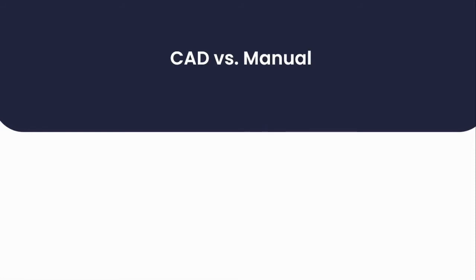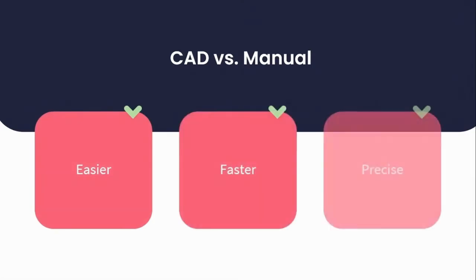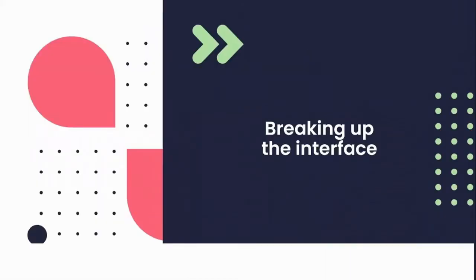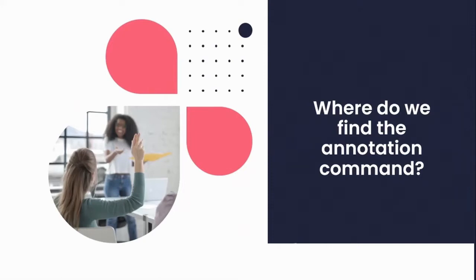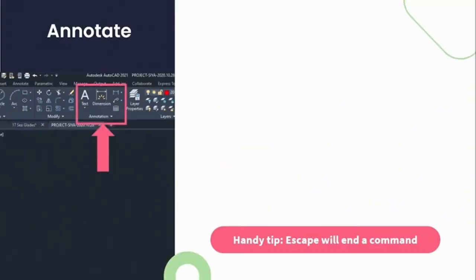That is exactly the concept of adding notation and dimension to your drawing to boost the information value of your drawing packs. And that is the best part about creating your drawings on a CAD program like AutoCAD — there are tools that make the process of adding notations much easier, faster and more precise than when creating drawings manually. Can anyone tell me where the annotation command is located on the ribbon? This is what your annotation toolset looks like and where it is located on your ribbon.